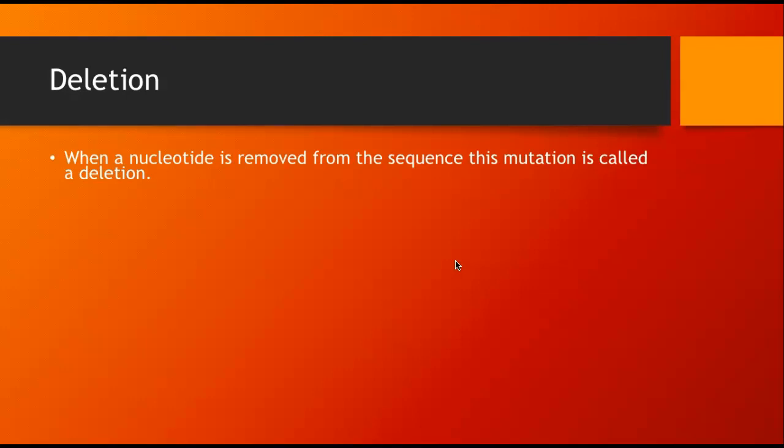What happens if we go the other way and we do a deletion? When a nucleotide is removed from the sequence, that mutation is called a deletion. So here's our example again. The fat cat ate the rat. Now we're going to delete something, and we get the fat at a tet hair at. So we've deleted one of these letters. And which one is it? Well, we no longer have the C in there. And so we've done that, and all of a sudden we are shifting this way now, where we've got ATA becoming one codon, and tet becoming a codon, and we're left with AT at the end of rat.